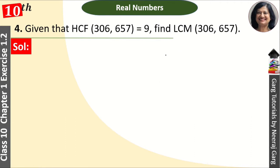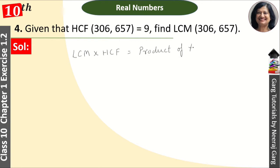HCF stands for Highest Common Factor, and LCM stands for Least Common Multiple. Between two numbers, we have a relation that we need to know. That relation is: LCM × HCF = Product of the two numbers. This is a formula that you must remember.